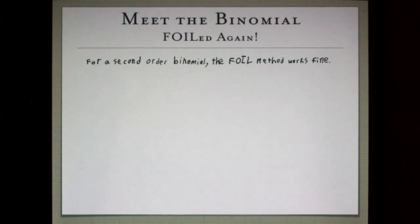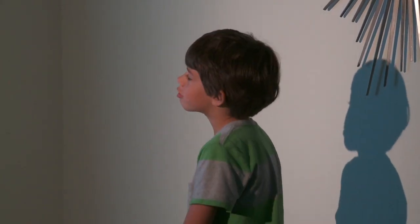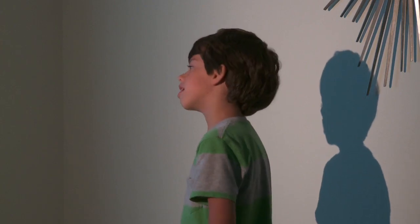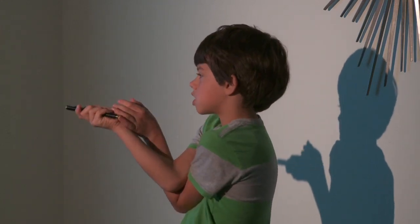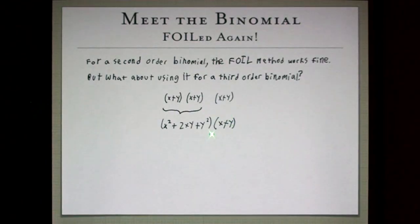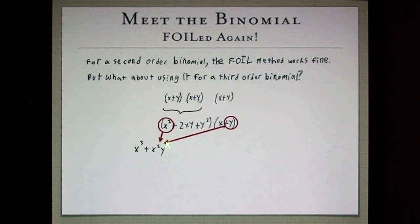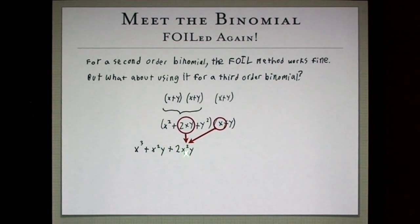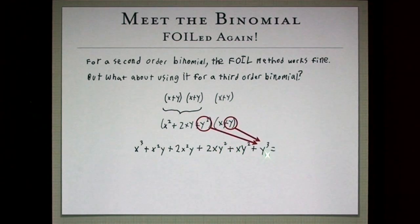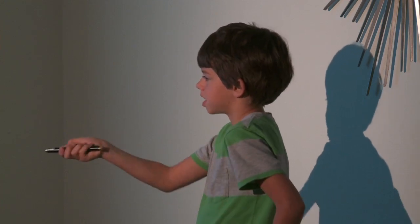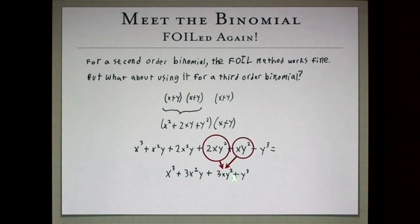The FOIL method works fine for a second-order binomial, but for a third-order binomial it gets harder. x plus y times x plus y times x plus y: first multiply two of them to get x squared plus 2xy plus y squared, then multiply by x plus y. Working through and combining like terms gives x cubed plus 3x squared y plus 3xy squared plus y cubed.